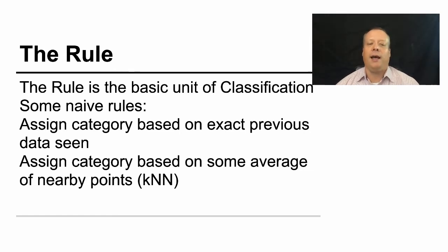You could have very naive rules which say things like assign a category based on exact previous data seen. That's similar to K nearest neighbors, where we say we're going to try and match the individual as close. And in fact, K nearest neighbors is a different one where you assign it based upon the average.